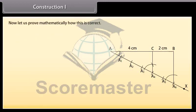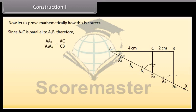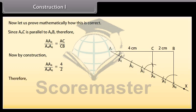Now let us prove mathematically how this is correct. Since A4C is parallel to A6B, therefore by the basic proportionality theorem, AA4 upon A4A6 equals AC upon CB. Now by construction, AA4 upon A4A6 equals 4 upon 2. Therefore AC upon CB equals 4 upon 2. This shows that C divides AB in the ratio 4 is to 2.